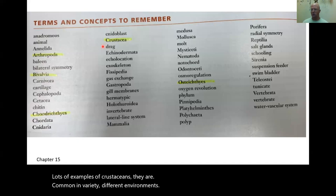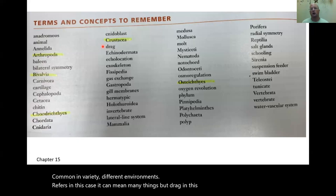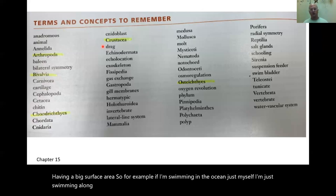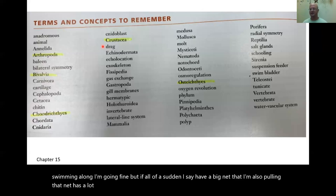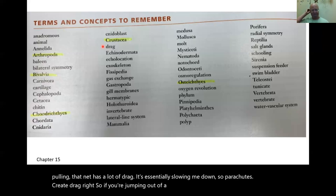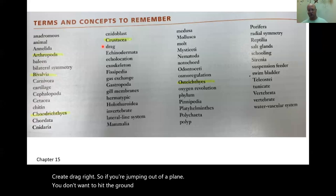Drag, in this chapter, essentially means friction caused by having a big surface area. If I'm swimming in the ocean and I'm also pulling a big net, that net creates drag — it slows me down. Parachutes create drag: if you're jumping out of a plane, the parachute slows you down, and that is drag.